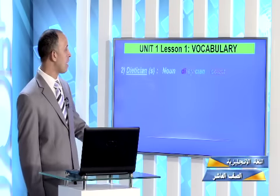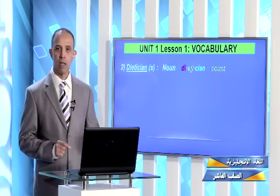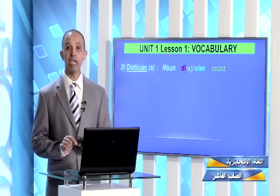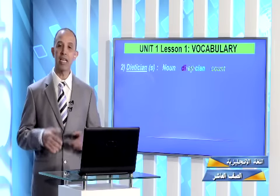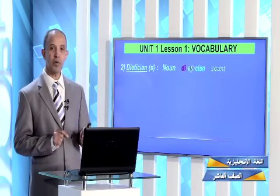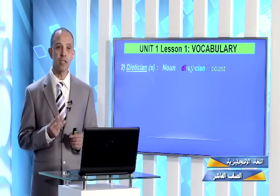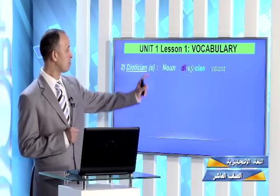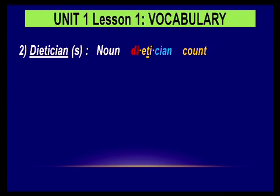The next vocabulary item is dietitian. The word dietitian is a noun and it is a count noun, which means we can add S to it and it becomes dietitians. The word dietitian is divided into three parts and the stress is on the second syllable — ti. So you say dietitian.